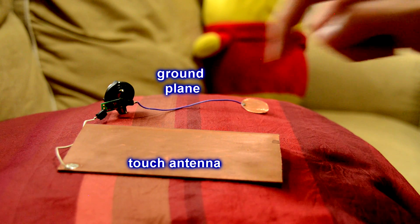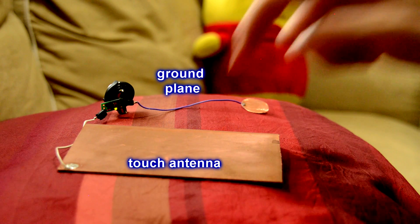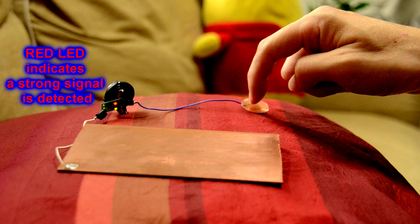Even if the ground plane is made smaller and the touch antenna made bigger, the sensitivity still follows the smaller plates.